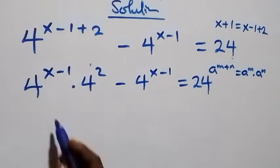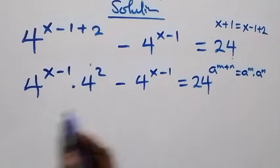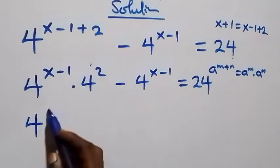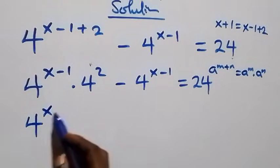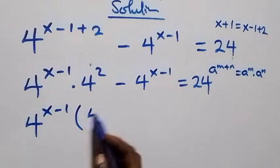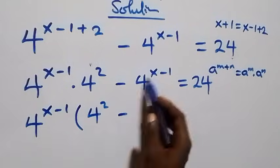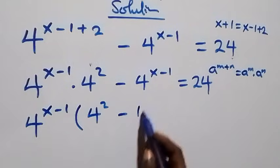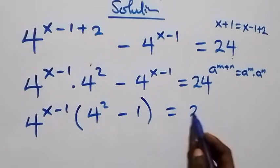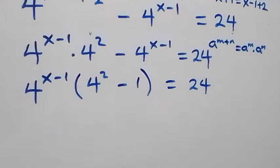That is, from here we have 4 raised to power x minus 1 — we factor it out, and we have 4 raised to power x minus 1 into brackets, here we have 4 raised to power 2 minus 1 in bracket, equals to 24 on this side.